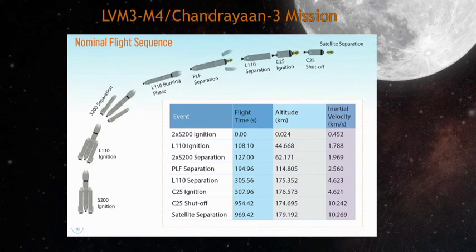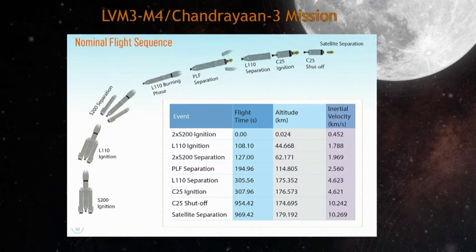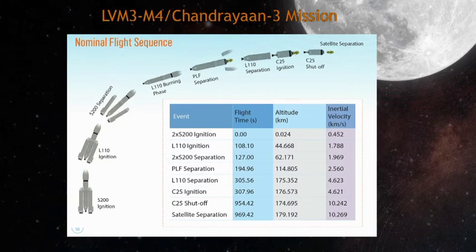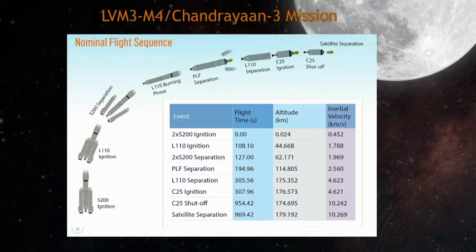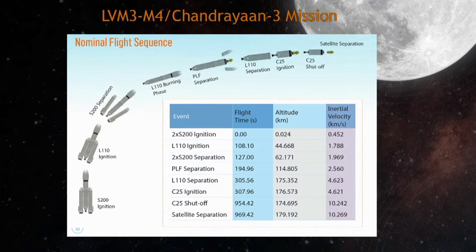The relative velocity gained by the rocket in the meantime is 1.59 km per second. At an altitude of 71 km, closed-loop guidance is initiated for LVM3.